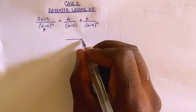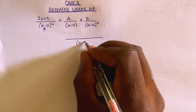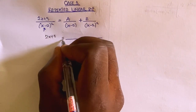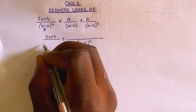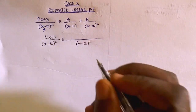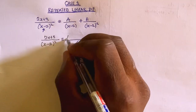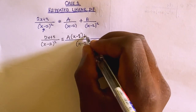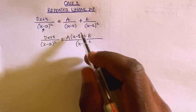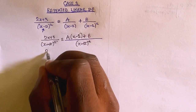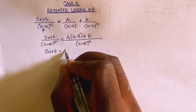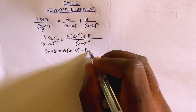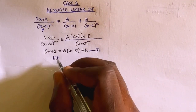Then you find the LCM. Finding the LCM, you are going to have (x minus 2) all squared, which is equivalent to 2x plus 3. Then multiplying through, you get A times (x minus 2) plus B. So we have 2x plus 3 equals A times (x minus 2) plus B. Let's call this equation 1.